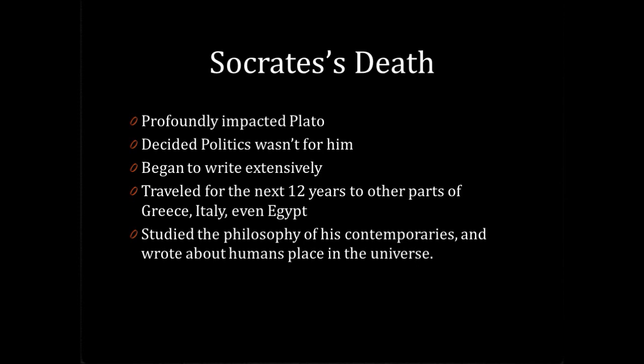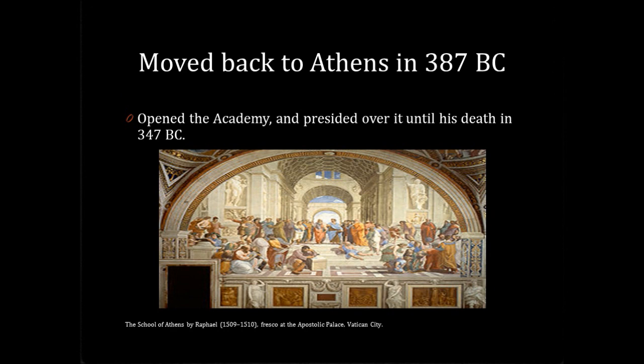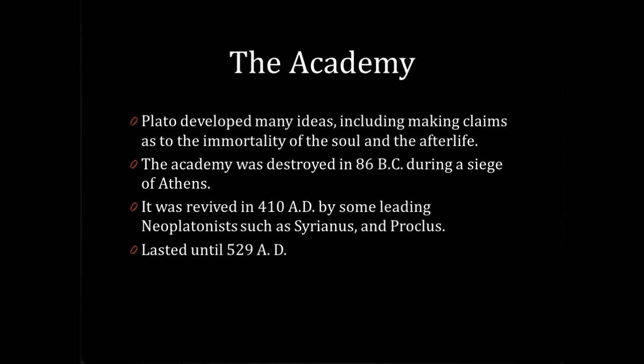He traveled to Greece, Italy, and even parts of Egypt for the next 12 years, studying the philosophy of his contemporaries and thinking about humanity's place in the universe. When he moved back to Athens in 387 BC, he opened a school for learning that became known as the Academy. Plato ran the school until his death in 347 BC, developing many ideas about the immortality of the soul and the afterlife. The Academy kept going after his death but was destroyed in 86 BC during the Siege of Athens. It was revived in 410 AD by some Neoplatonists and lasted until 529 AD.